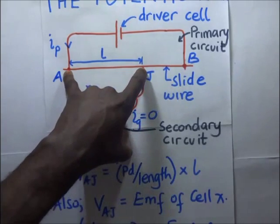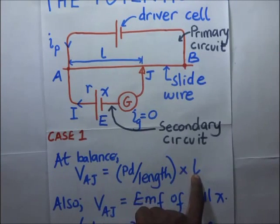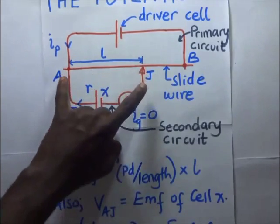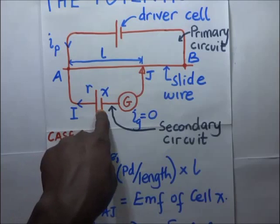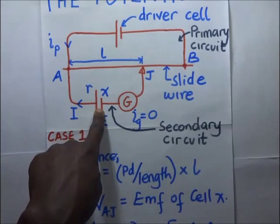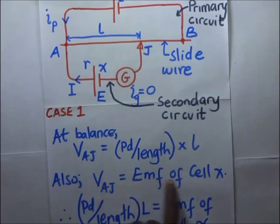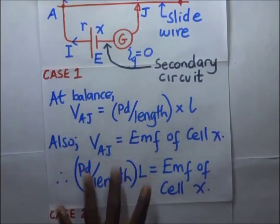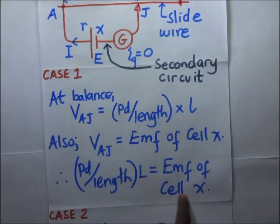To get the PD across A and J, we take the potential difference per unit length and multiply it by the balance length L. So VAJ equals PD per unit length times the balance length. At balance, the potential difference between A and J is equivalent to the potential difference across the cell in the secondary circuit, which is essentially the EMF of that cell. Therefore, PD per unit length multiplied by L equals the EMF of cell X.